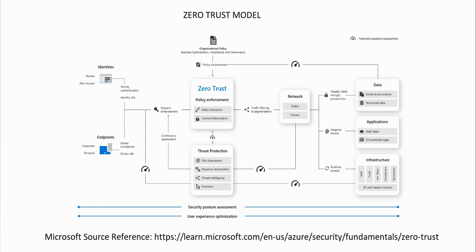When it comes to administration in the zero trust model, we work off what we call a JIT strategy — Just In Time administration. There's also a strategy called JEA, Just Enough Access, which goes hand in hand with least privilege. The idea is that I'm going to give you access when you need it, during the short period of time that you need it, and then the permissions will be taken away when you no longer need them.